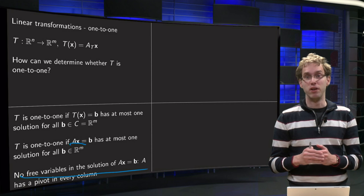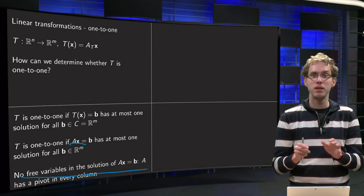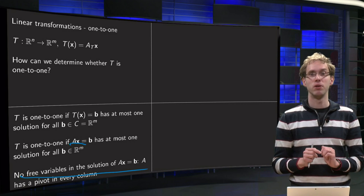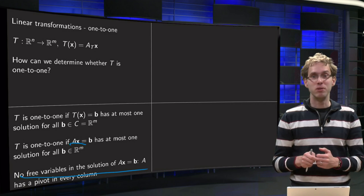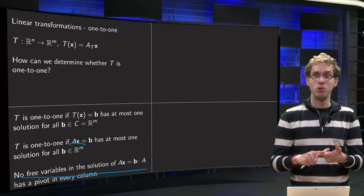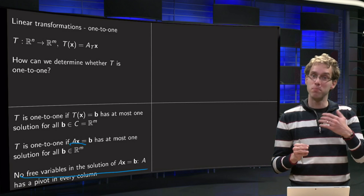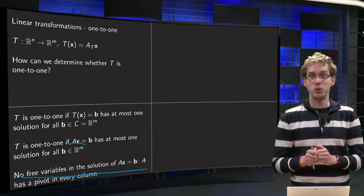Because as soon as you have free variables, for example Ax equals zero has infinitely many solutions, so that is not possible. So you cannot have free variables, but if you don't have free variables then you have either zero or one solution of Ax = b, so at most one solution. So how can you see whether your transformation is 1 to 1?